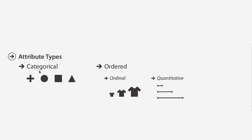Categorical attributes have distinctly different things inside of them – for example, different shapes. These are just different things that don't have an intrinsic ordering between them. Ordinal attributes, for example t-shirt size – small, medium, and large – are distinctly different things, but they have a natural ordering: small is smaller than medium, and medium is smaller than large. Quantitative attributes are just numbers – specific quantities, like 5.2 or 6.8. Those are quantitative attributes.